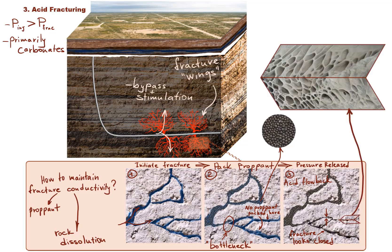But in acid fracturing, once acid travels down the fracture it dissolves the walls of the fracture. If this dissolution is non-uniform, the fracture may close with conductivity still being retained even if there is no proppant. This is due to the fact that there would be high and low spots — points of support and voids — that hold the channel open and flowable. So this is the main idea behind acid fracturing.